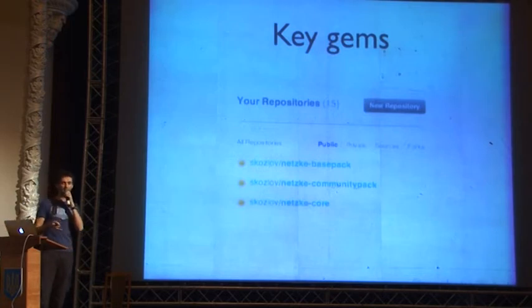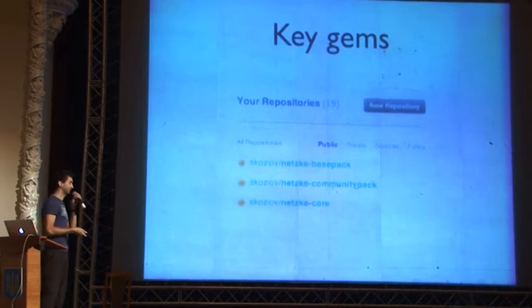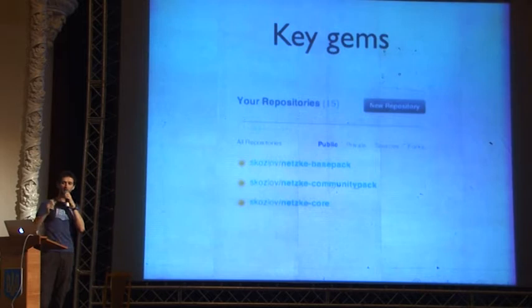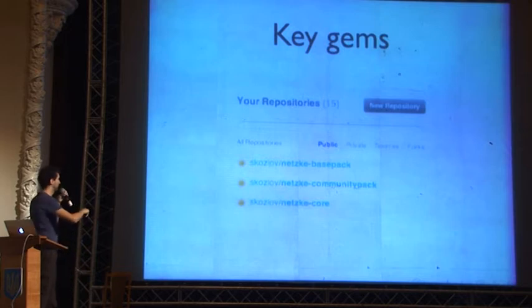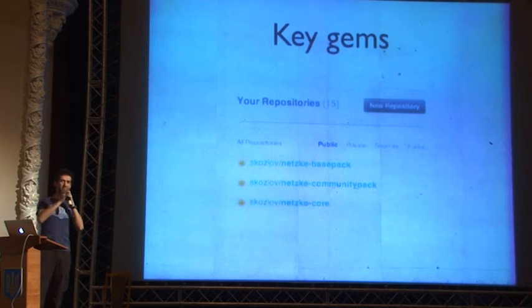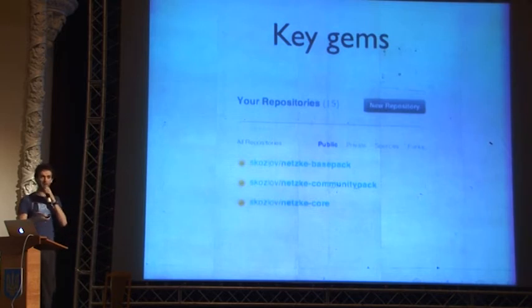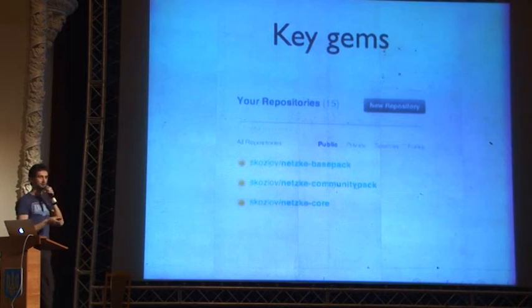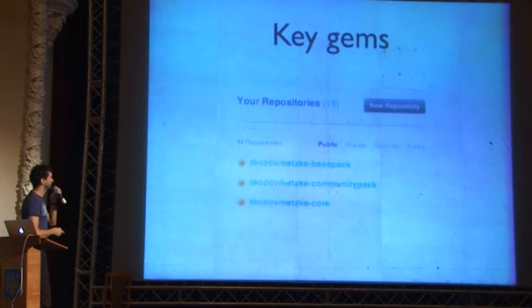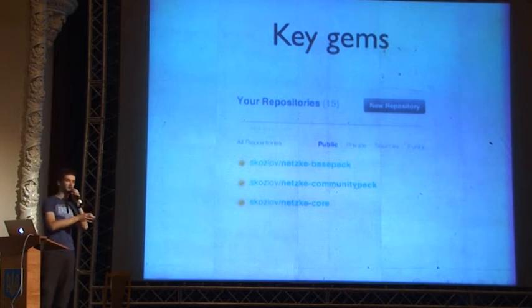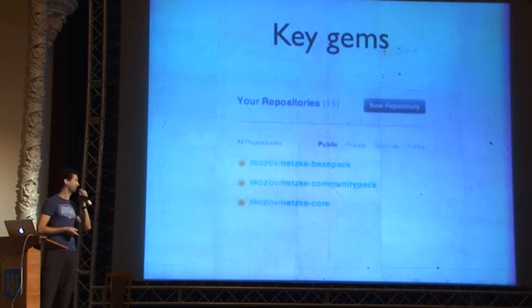Netski Core is basically the framework itself. It does all the heavy stuff about dynamically loading the components, client-server communication between JavaScript and Ruby and the other way around. Component inheritance, composability — everything is in there for you to build your own components. The components you've seen in action are part of Netski Base Pack, such as grids and forms. And part of them are in Community Pack, which I consider more or less like a staging area for components that will appear later in Base Pack.